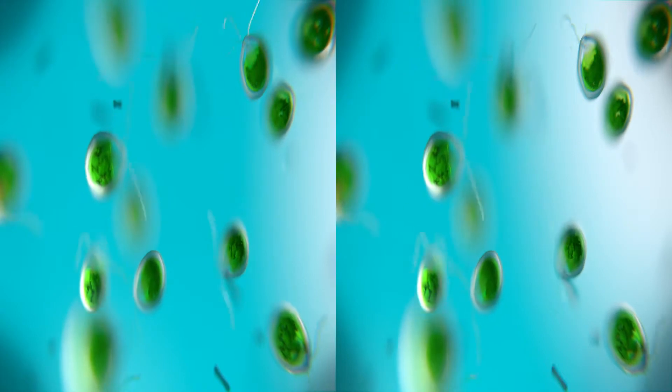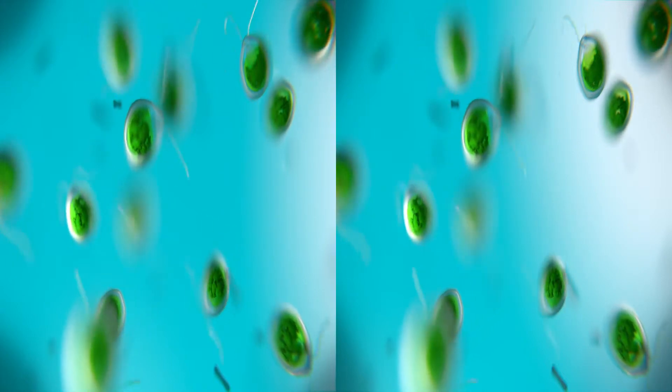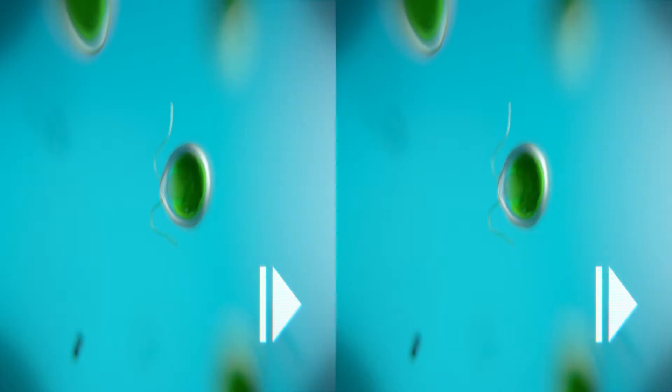These images show Chlamydomonas green algal cells as seen through a microscope. They pull themselves forward by using two flagella.